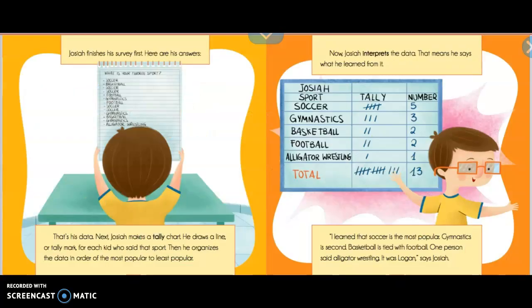Josiah finishes his survey first. Here are his answers. That's his data. Next, Josiah makes a tally chart. He draws a line or tally mark for each kid who said that sport. Then, he organizes the data in order of the most popular to least popular.